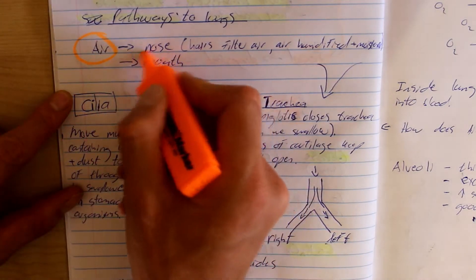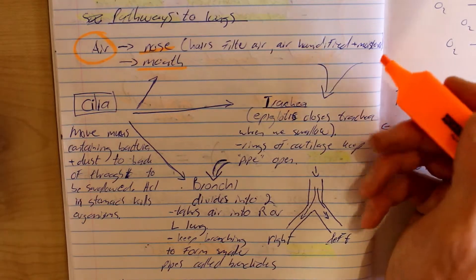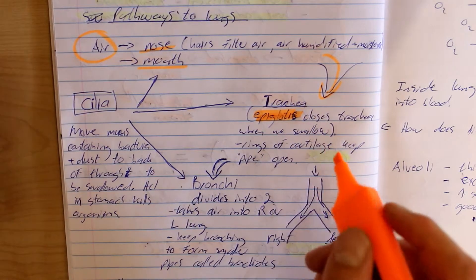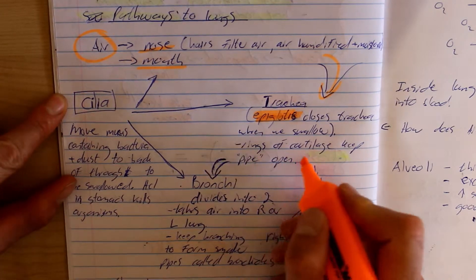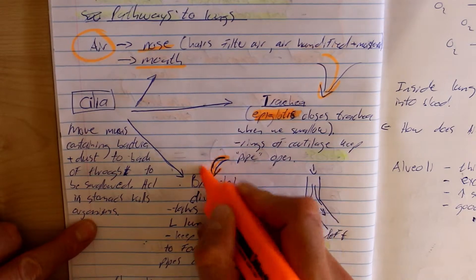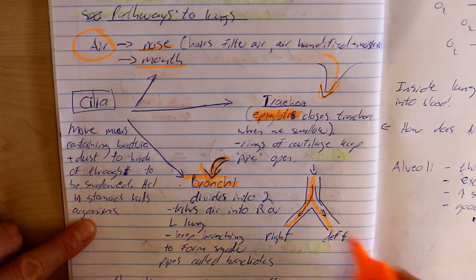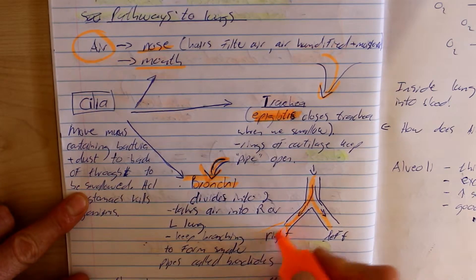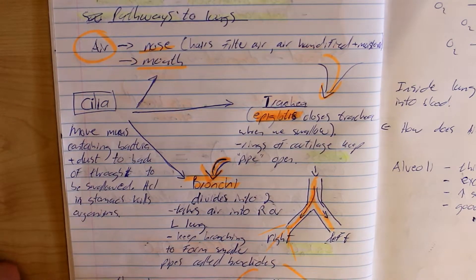Air is breathed in via the nose or the mouth. The nose has hairs which filter air, humidify it and moisten the air. The air then goes to our trachea. Here we have a structure called the epiglottis, which closes the trachea when we swallow — it prevents food from going down the wrong hole. Rings of cartilage in our trachea keep this pipe structure open. Air then goes further to our bronchi, which divides into two main branches — the right and left bronchi — going to the right and left lung. Once inside the lung, they keep branching to produce smaller pipes called bronchioles.